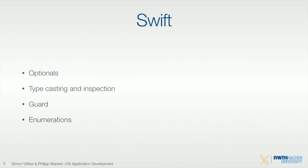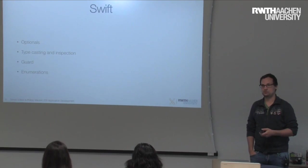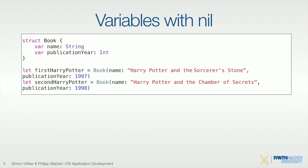With Swift, we are going to talk about optionals, which I introduced last week but will cover in more detail. We'll also discuss typecasting and inspection — how you can check types and work with them — the guard statement, which is a fairly new concept introduced in Swift, and enumerations, which in Swift have more functionality than enumerations usually do.